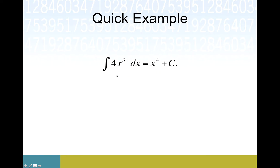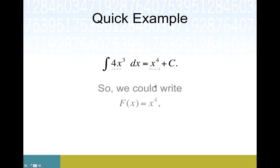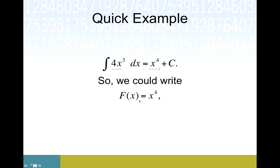Revisiting this initial example: remember we were starting with 4x cubed and asking what we could take the derivative of to get there. There's a whole bunch of answers. We came up with x to the fourth in the initial example, and that's a perfectly valid answer — capital F(x) would be x to the fourth. But there are actually infinitely many other possibilities. For instance, we could have another function G that is also x to the fourth with the same variable components, but with a potential extra constant — a plus C. In this case it's minus two, or you could even imagine an invisible plus one as an extra constant.